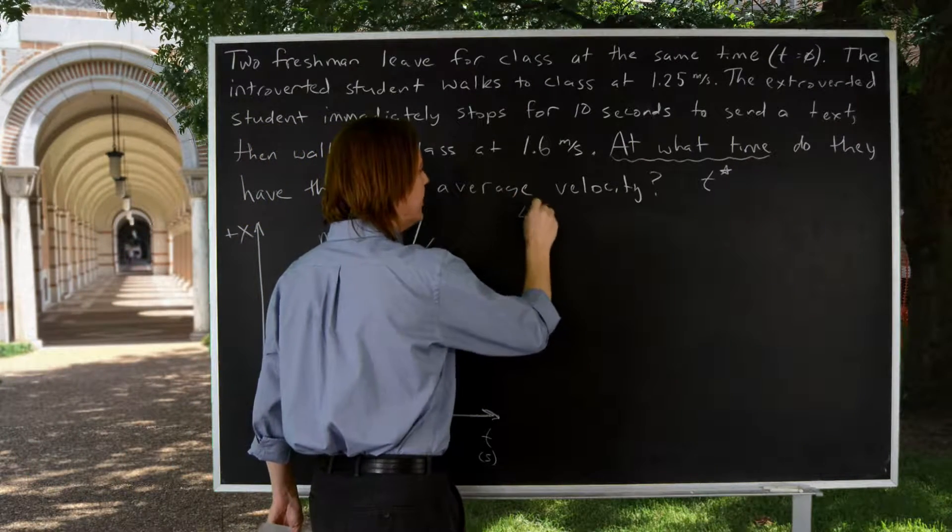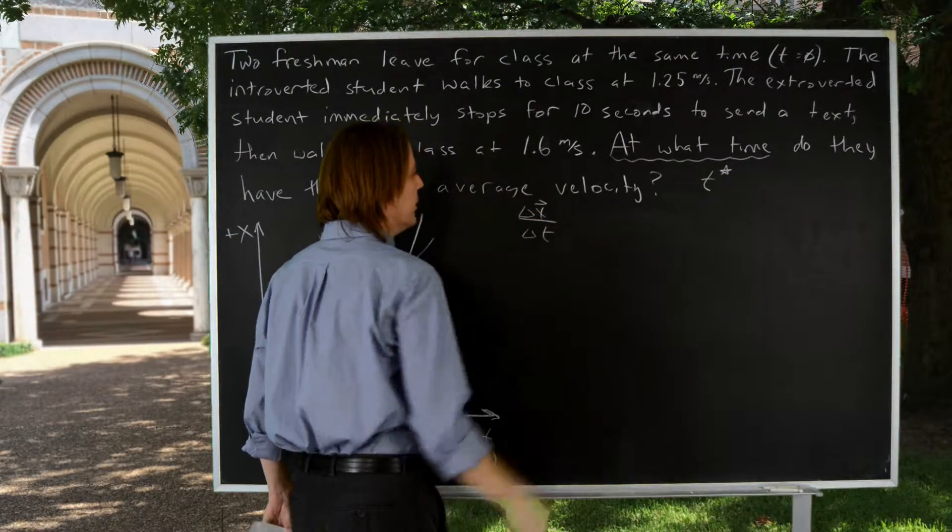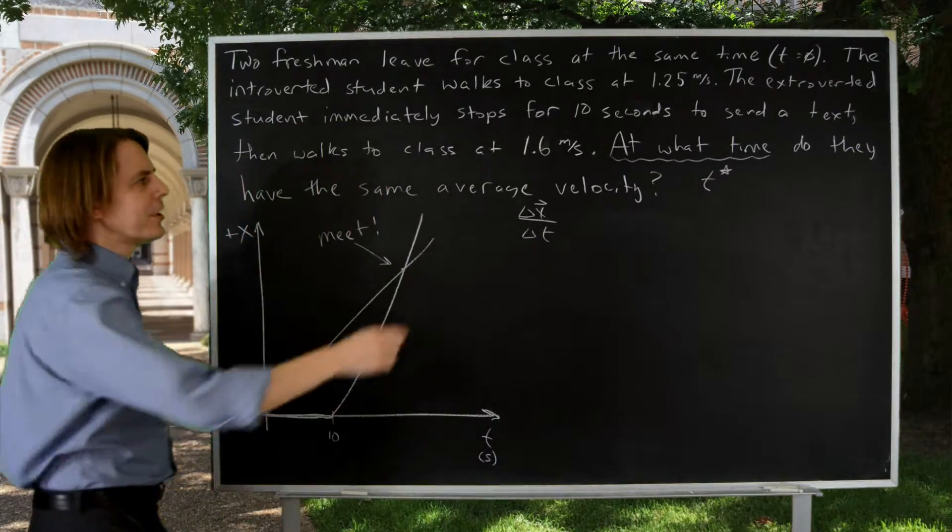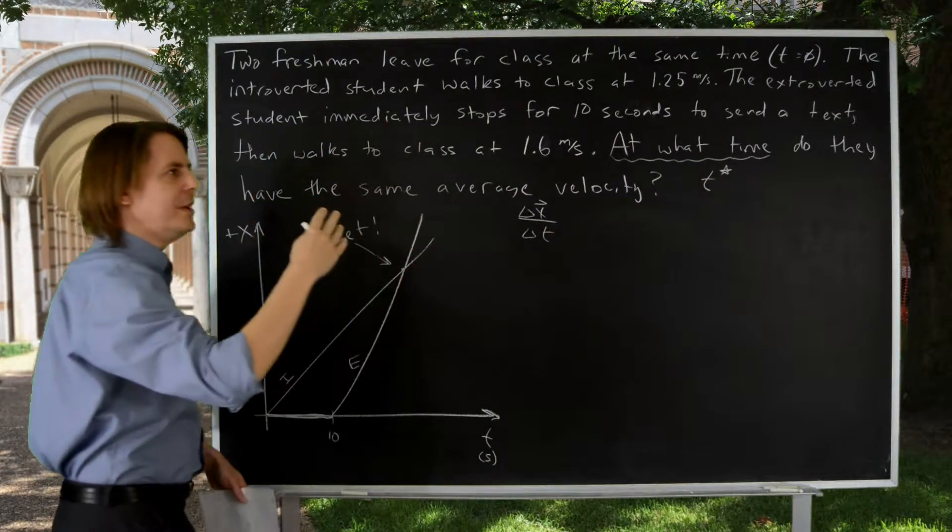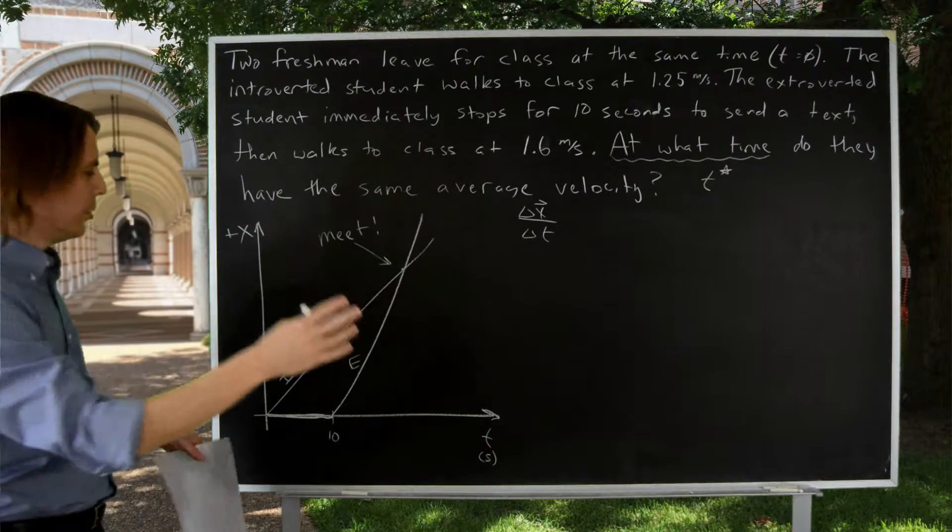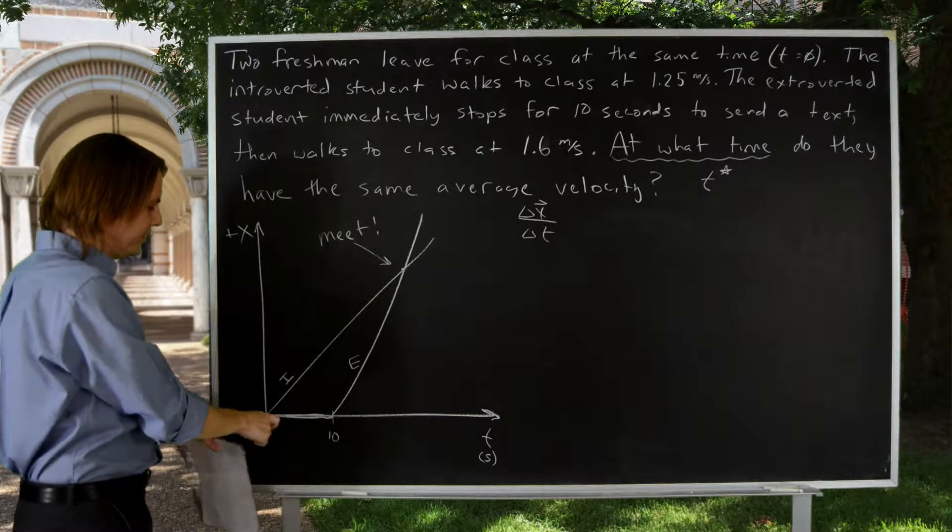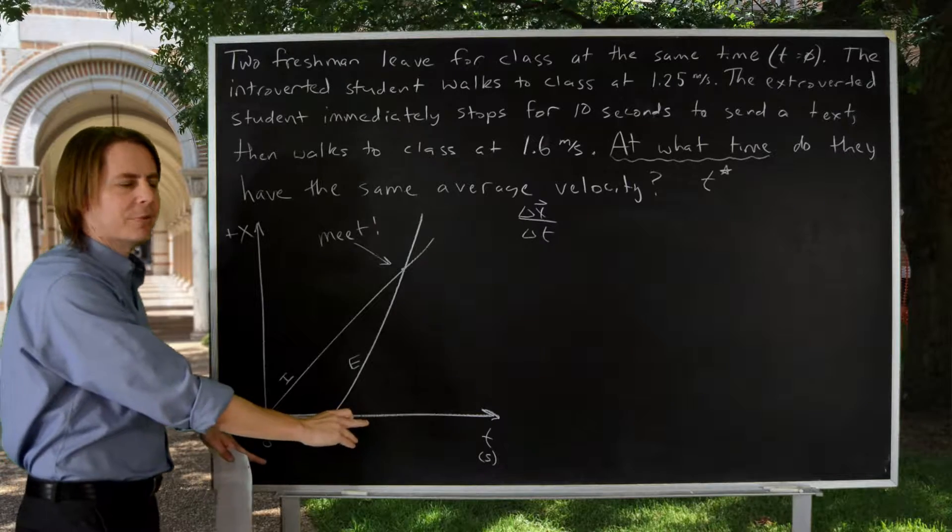It's the displacement over the time. So if we're looking for a specific time, t star, which would be t star minus zero, both of these have the same origin of time, zero. So t star must be at the same time.